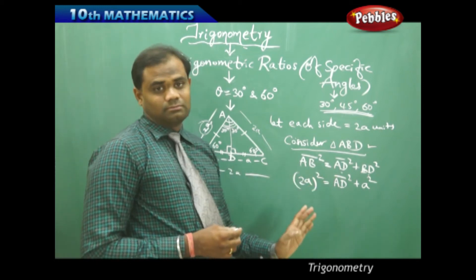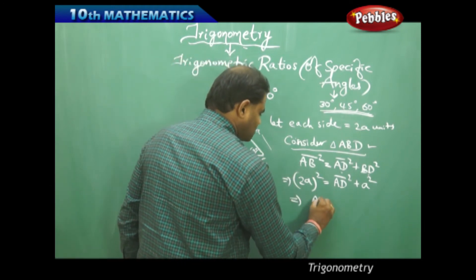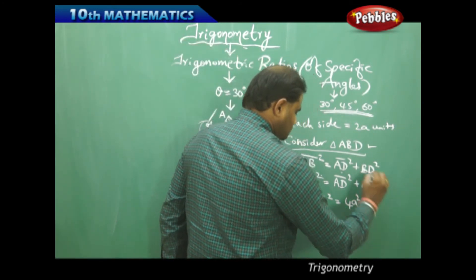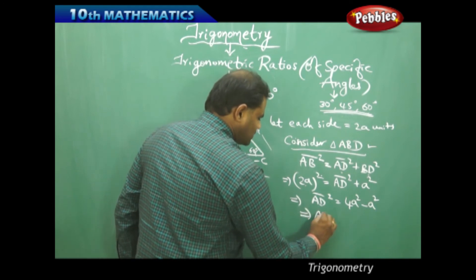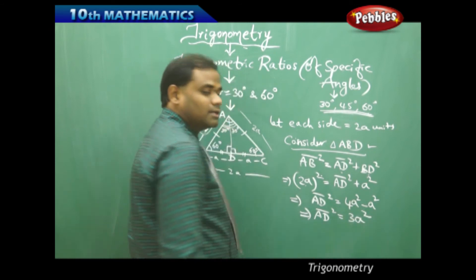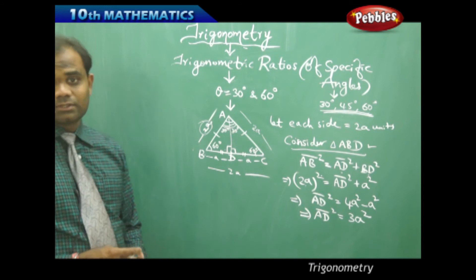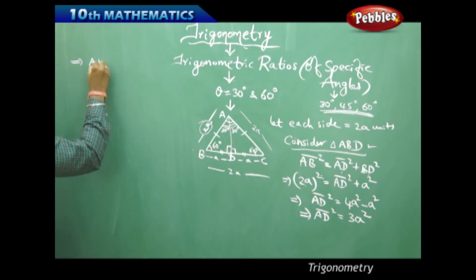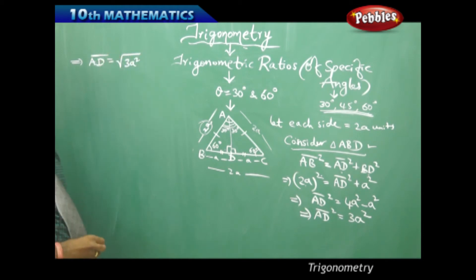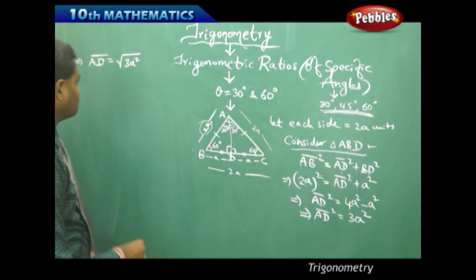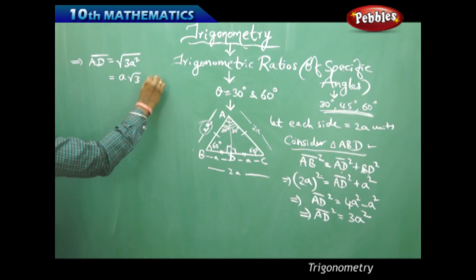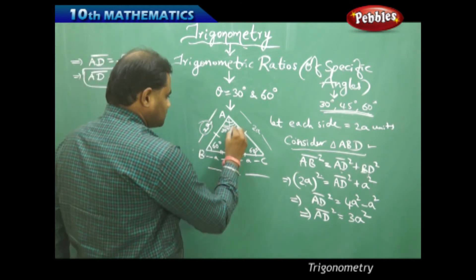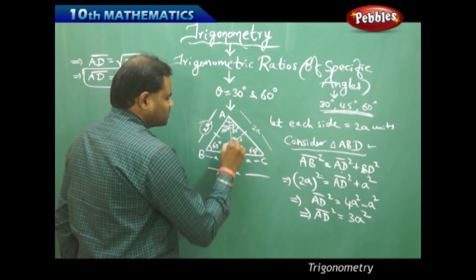Rearranging, AD² = 4A² − A² = 3A². Taking the positive square root (since lengths cannot be negative), AD = √(3A²) = A√3 units. So the perpendicular height AD in the equilateral triangle is A√3.